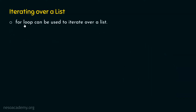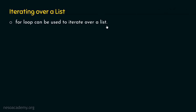For loop can be used to iterate over a list. We can use for loop to access each item of a list, and then we can do whatever we want to do with those items that we receive from the for statement. In order to understand how this works, we can consider one simple example.